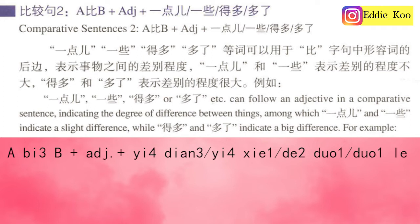This sentence means A is a little more adjective than B, or A is much more adjective than B. Basically, they're comparing A and B. The only difference is the degree. If you say 一点 or 一些, that means A is a little more adjective than B. However, if you say 得多 or 多了, that means A is much more adjective than B. To make it more clear, I suggest we take a look at the four example sentences.